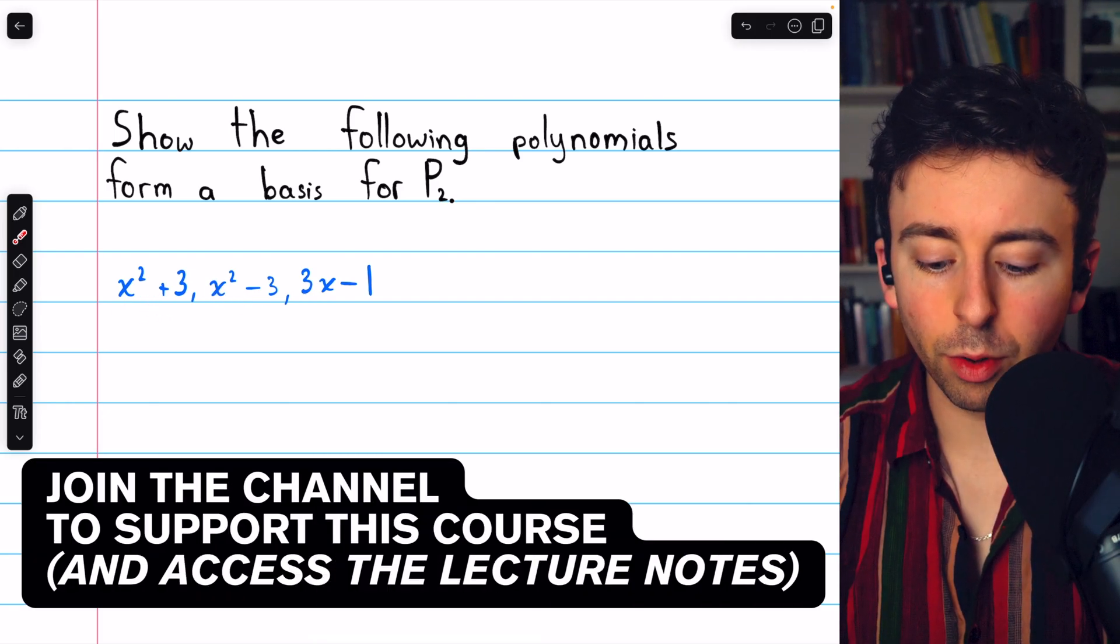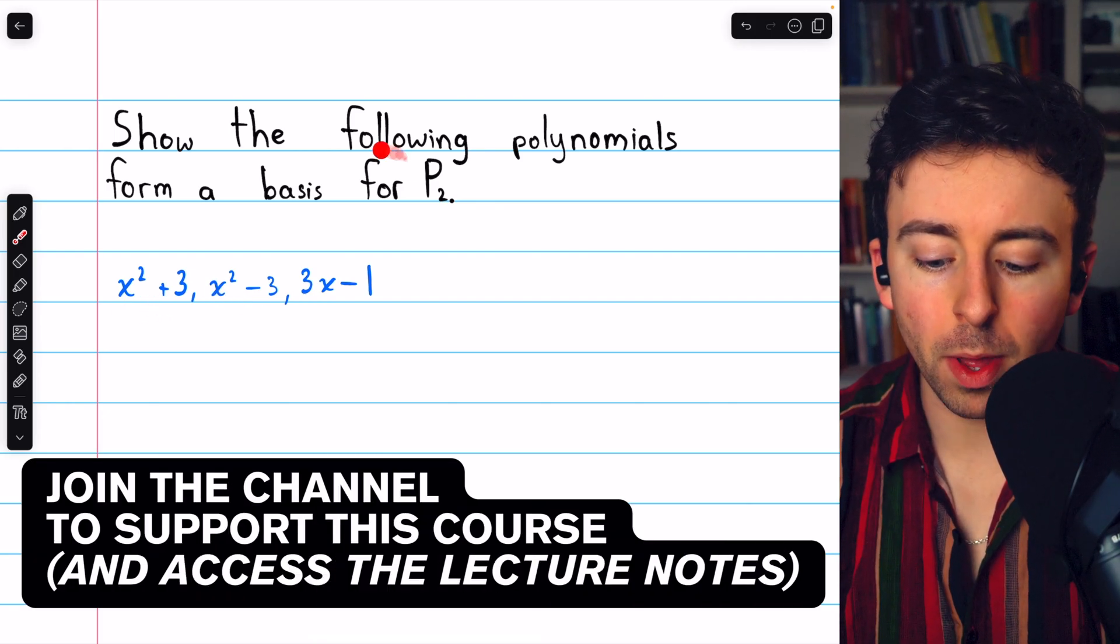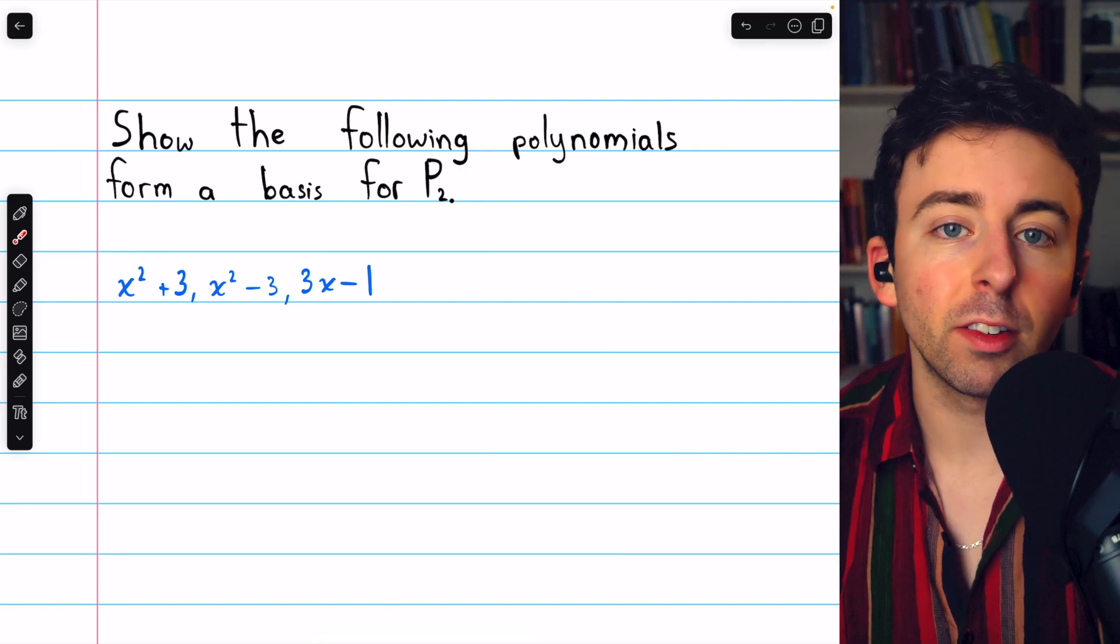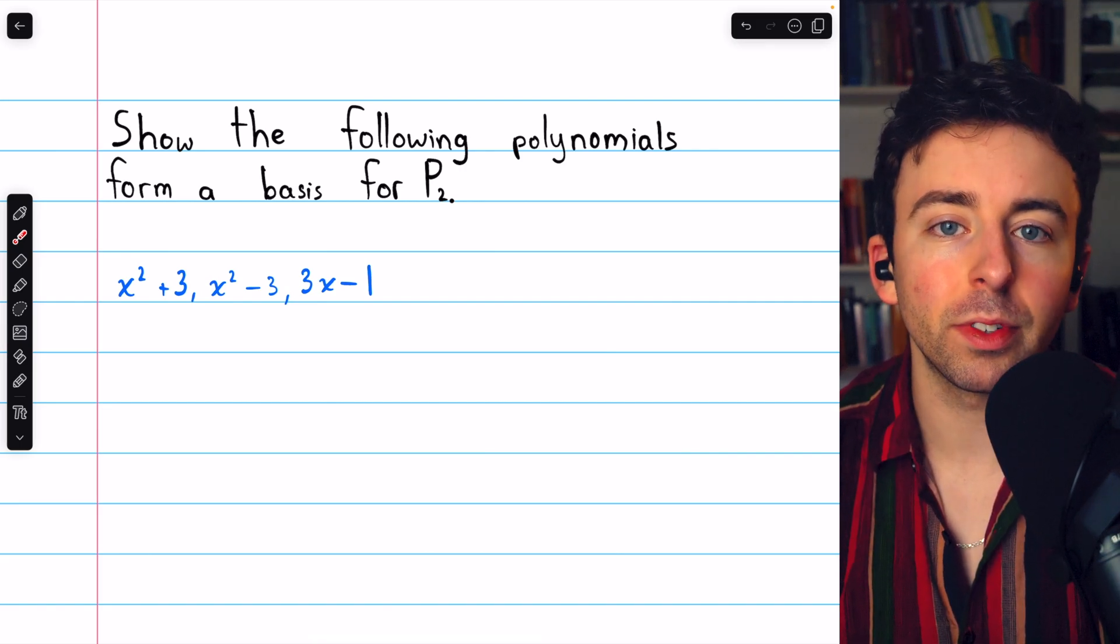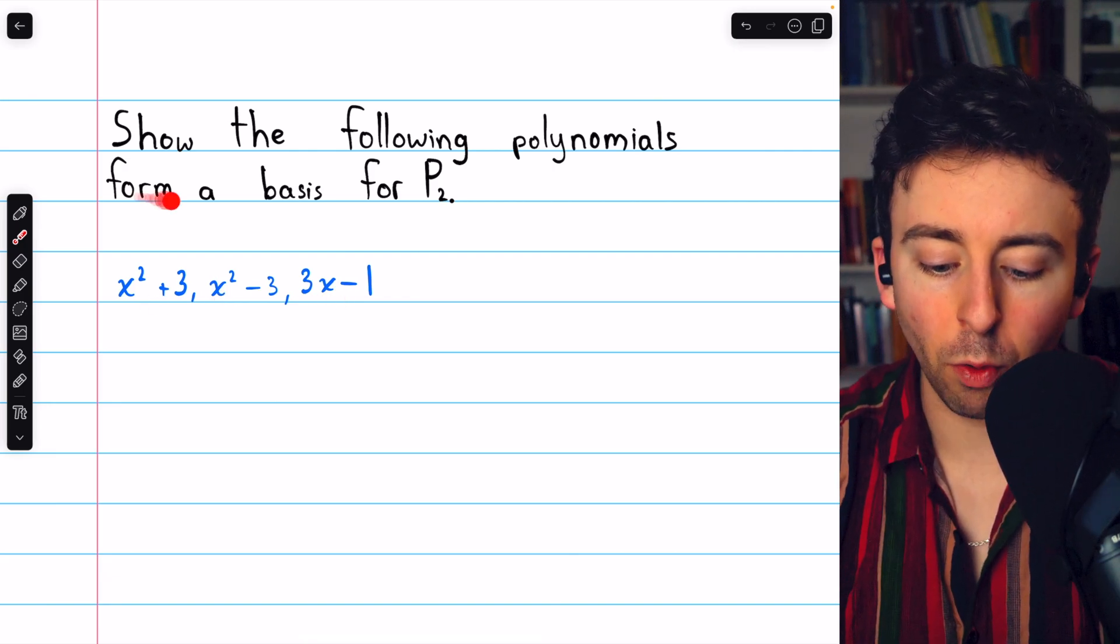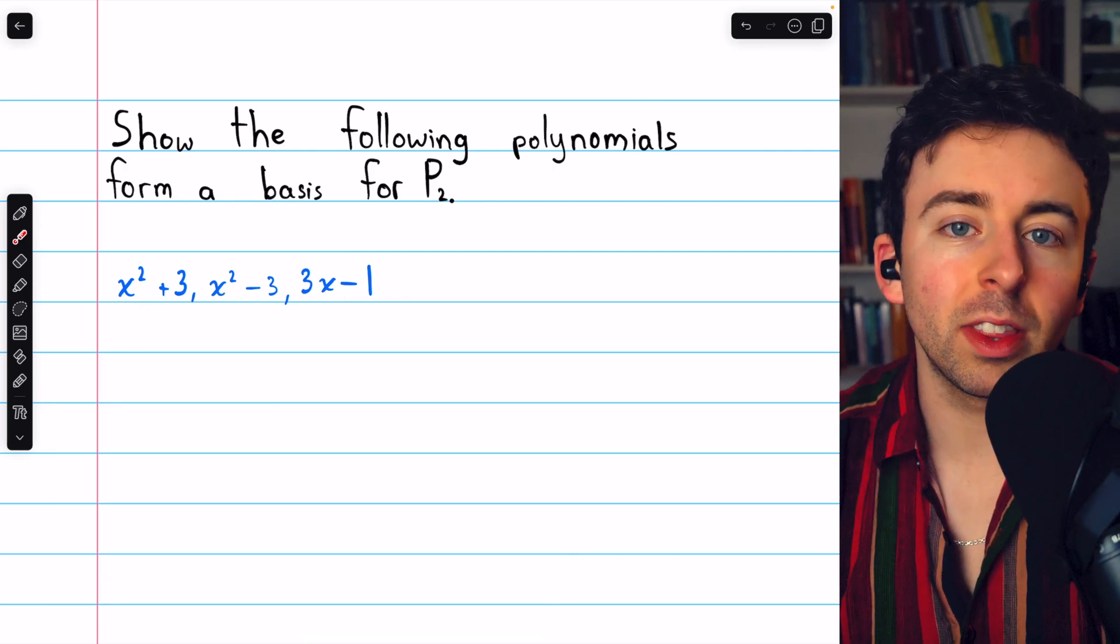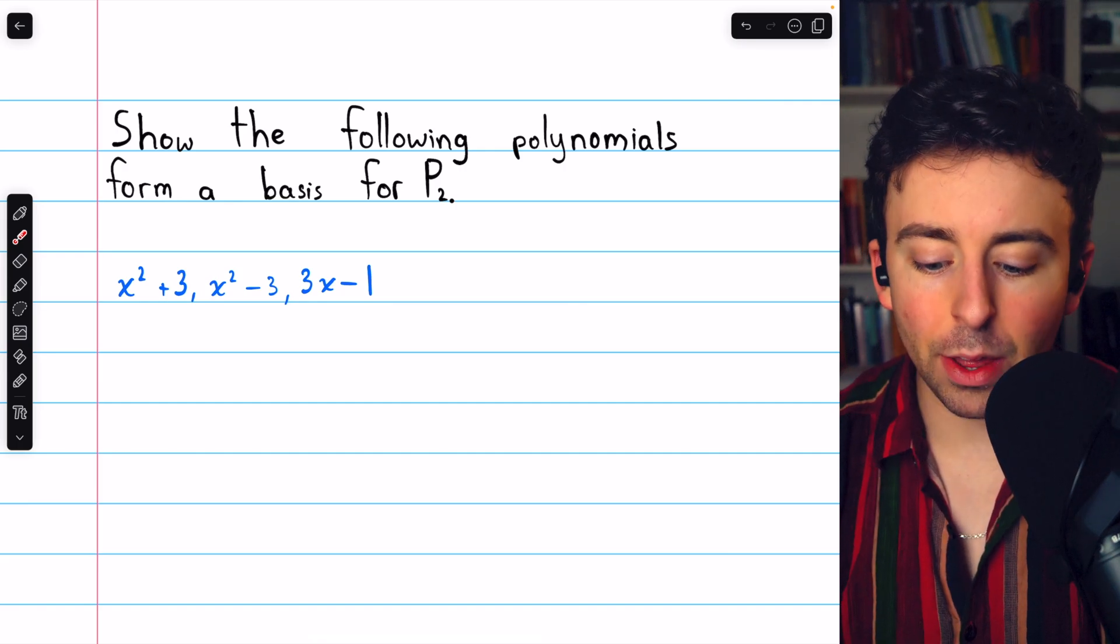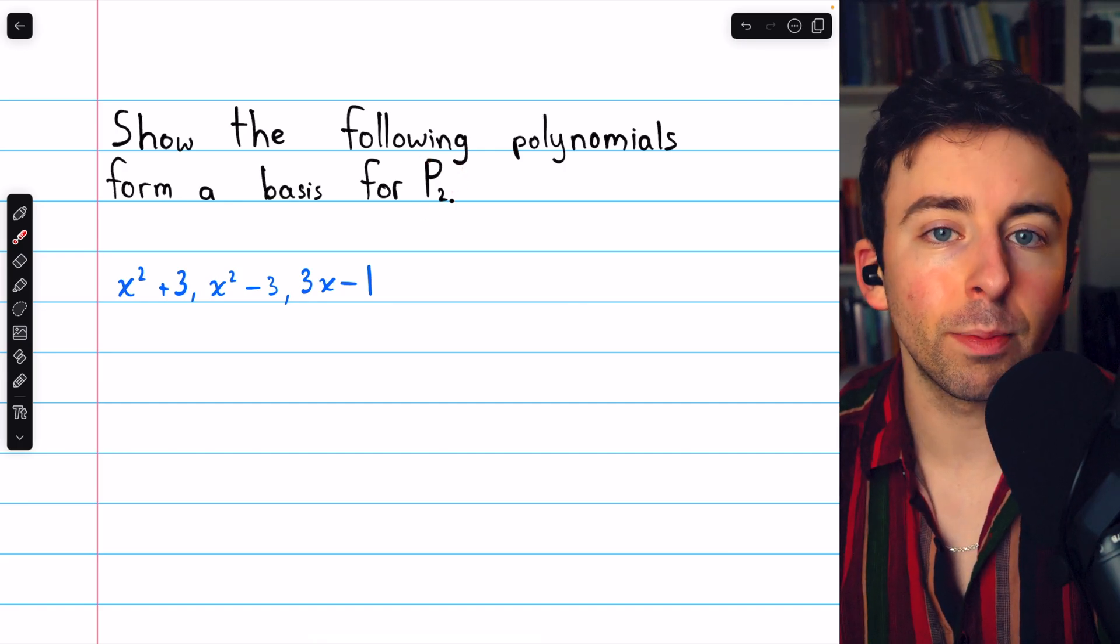We're going to show that these three polynomials form a basis for the vector space P2, the vector space of polynomials of degree at most 2. By definition, to show that these three polynomials form a basis, we'll need to show that they are a linearly independent set of polynomials and that together they span this space.